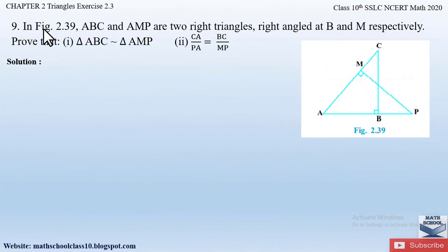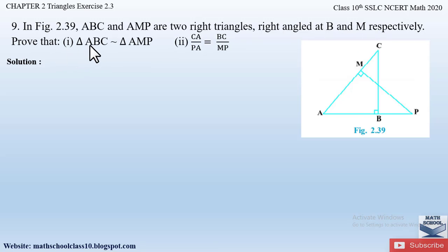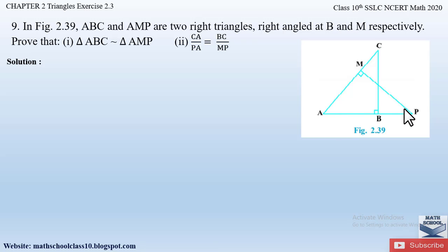Question number 9 from exercise 2.3, chapter 2 Triangles says: in figure 2.39, ABC and AMP are two right triangles, right-angled at B and M respectively. We have to prove that triangle ABC is similar to triangle AMP, and also show that CA/PA = BC/MP. Here triangles ABC and AMP are given which are right-angled at angle B and angle M respectively.